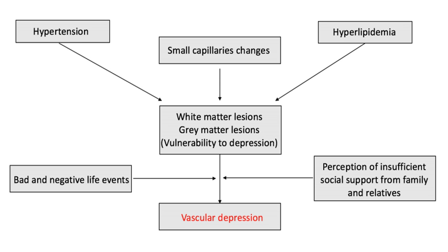Researchers hypothesize that vascular depression disrupts processes in certain parts of the brain to put individuals at risk for developing depression. Two primary mechanisms have been proposed: one associates white matter lesions and cerebrovascular risk factors. These two mechanisms parallel the differences between MRI and clinically defined vascular depression, yet do not necessarily represent contradictory mechanisms. These brain changes are thought to be reflected in the white matter lesions identified by MRI.